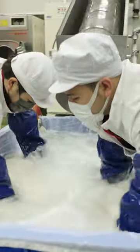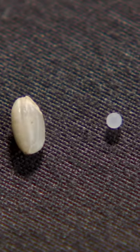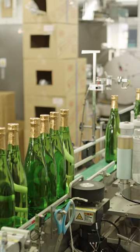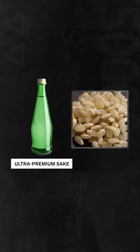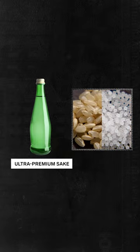Sake is categorized by its ingredients and the degree of rice polishing, also referred to as the rice polishing ratio. To be considered Junmai Dai Ginjo, at least 50% of the grain must be removed through polishing.